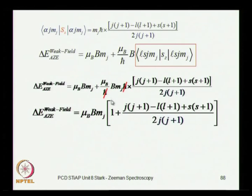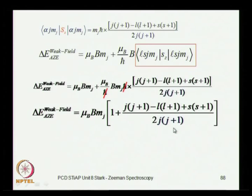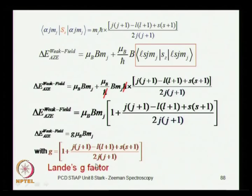This is the energy correction: the ħ cancels, and if you combine these two terms, there is the Bohr magneton times the magnetic field in both terms, and MJ in both terms. So you extract the common factor, and you have 1 plus [J(J+1) - L(L+1) + S(S+1)] / [2J(J+1)]. This is precisely the Landé g-factor. It takes exactly the same place as g did for the orbital angular momentum and for the spin angular momentum.